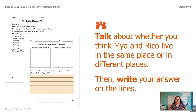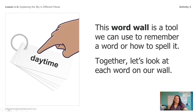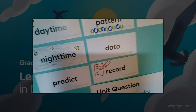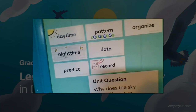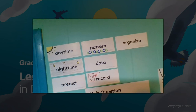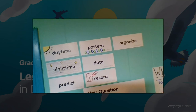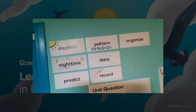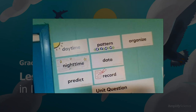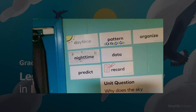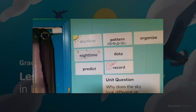Then talk to your partner first about whether you think Maya and Rico live in the same place or different places. After you've had a conversation about it, write your answers — it's always better to talk about what you're going to write before you start writing. I also want to give you some word wall words to help you spell and remember what words to use. Our word wall words are: daytime, nighttime, predict, pattern, data, record, and organize. Use those in your writing. Good luck, see you next time!